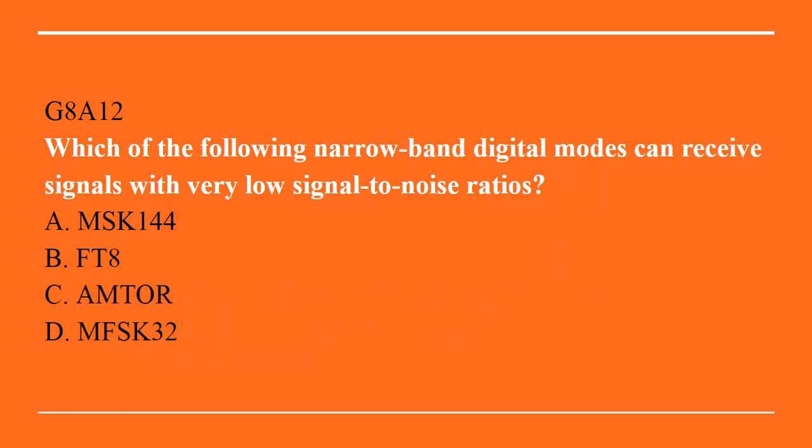G8A12: Which of the following narrow bandwidth digital modes can receive signals with very low signal-to-noise ratios? A. MSK144. B. FT8. C. Amtor. D. MFSK32. Answer is B. FT8.